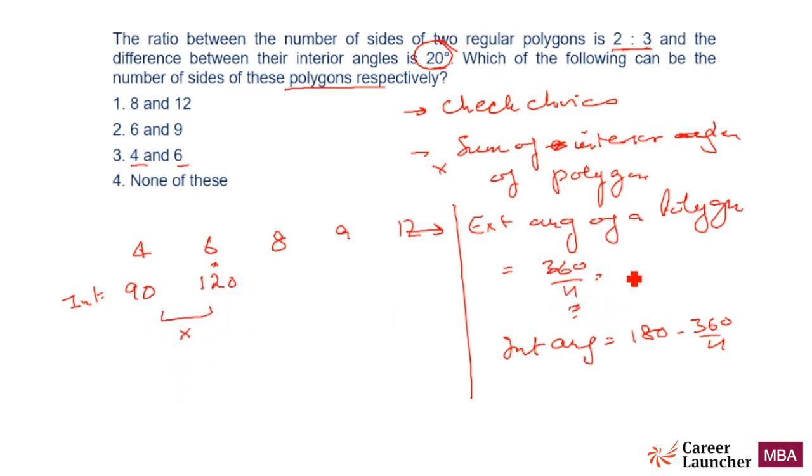If it is 8, what is 360 by 8? 360 by 2 is 180, 180 by 2 is 90, by 2 is 45. So exterior angle becomes 45, interior angle will be 180 minus 45, so 135.